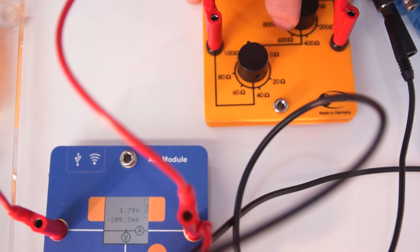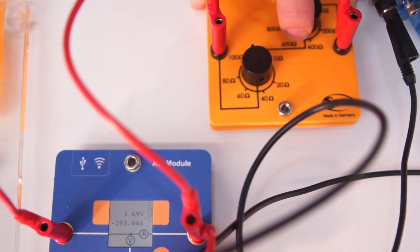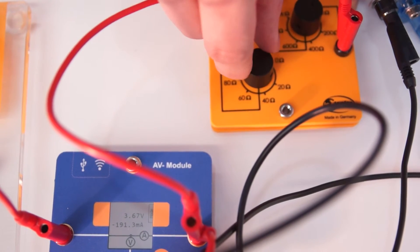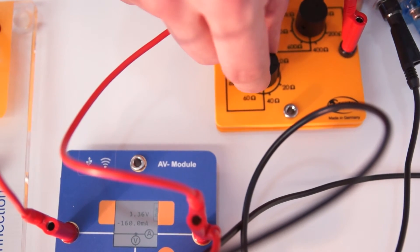At the beginning the resistance is very high and it does not flow energy to the reversible fuel cell. If you reduce the series resistance now you can see that the voltage and current and thus the power supply for the building decreases.